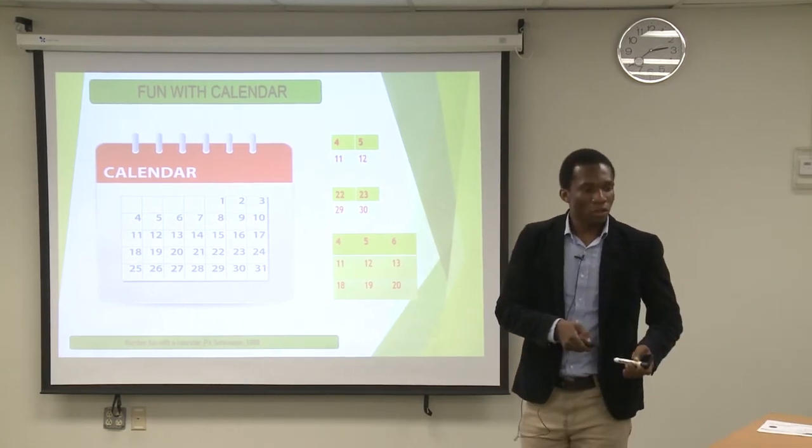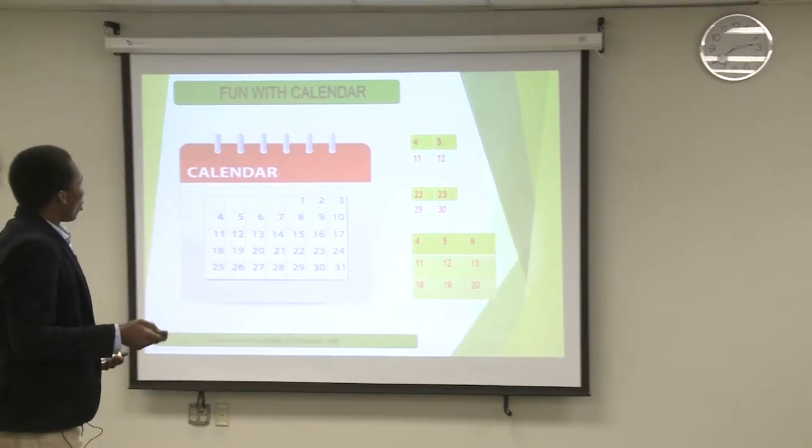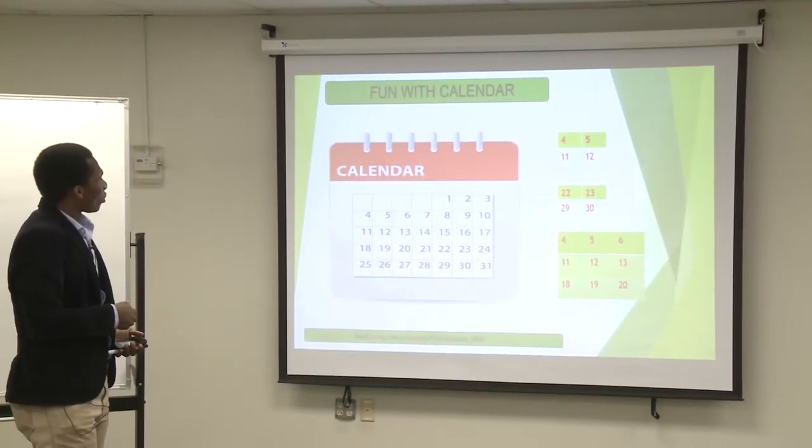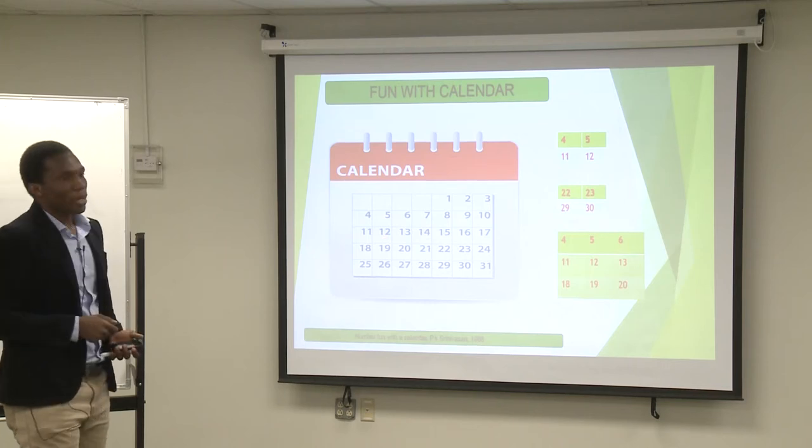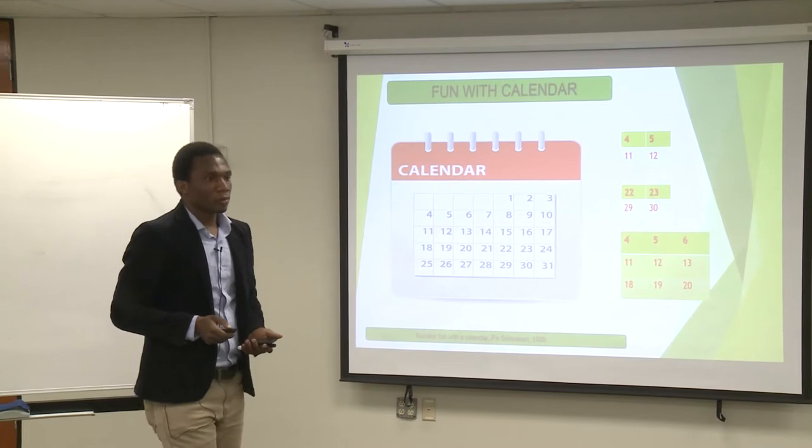So please sir, I want you to just pick any random, you have a calendar with you, just pick a sum of any four numbers, any four dates that form a square. Okay? Just give me the sum. 88.